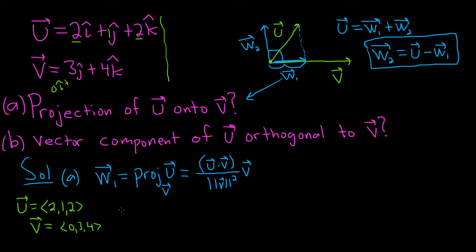Let's do u dot v on the side here. You multiply the components and add. So 2 times 0 plus 1 times 3 plus 2 times 4. This equals 0 plus 3 plus 8,